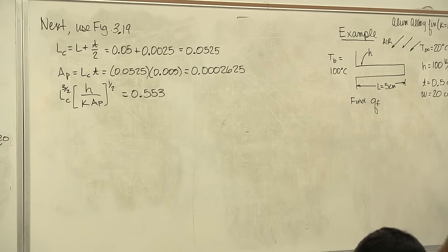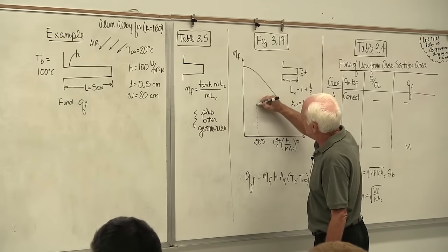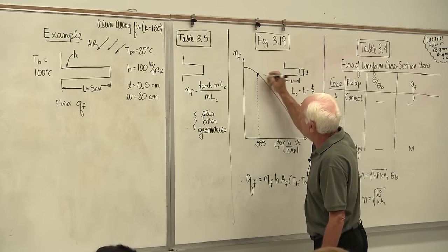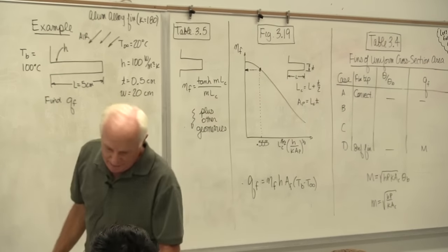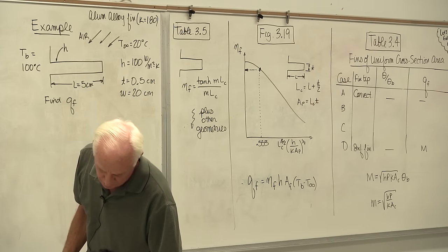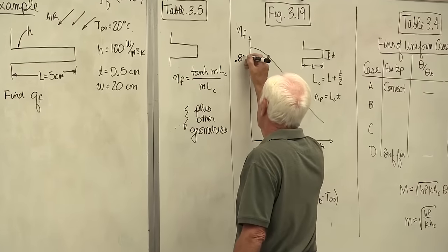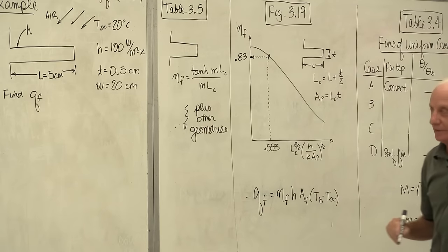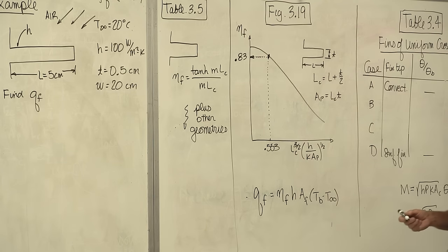Going up vertically to the rectangular fin line and across horizontally, the fin efficiency is somewhere between 0.82 and 0.83. I took 0.83. It's definitely not 0.80 and not 0.85. You can get within about 1 to 2% reading error from the graph — that's really good.